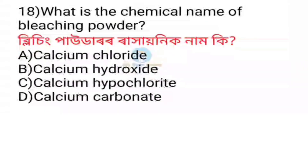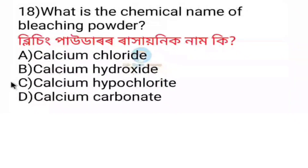What is the chemical name of bleaching powder? Very important question. It is calcium hypochlorite.